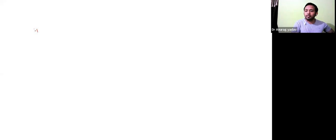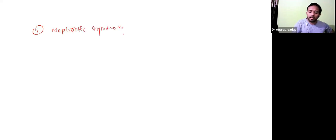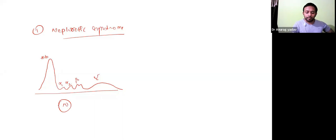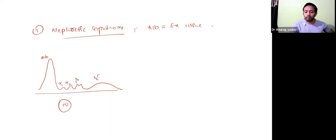First, let's see what the pattern looks like in nephrotic syndrome. The normal pattern shows albumin, alpha-1, alpha-2, beta, and gamma. In nephrotic syndrome, a lot of albumin is excreted in the urine, so the concentration of albumin starts reducing because protein is lost.